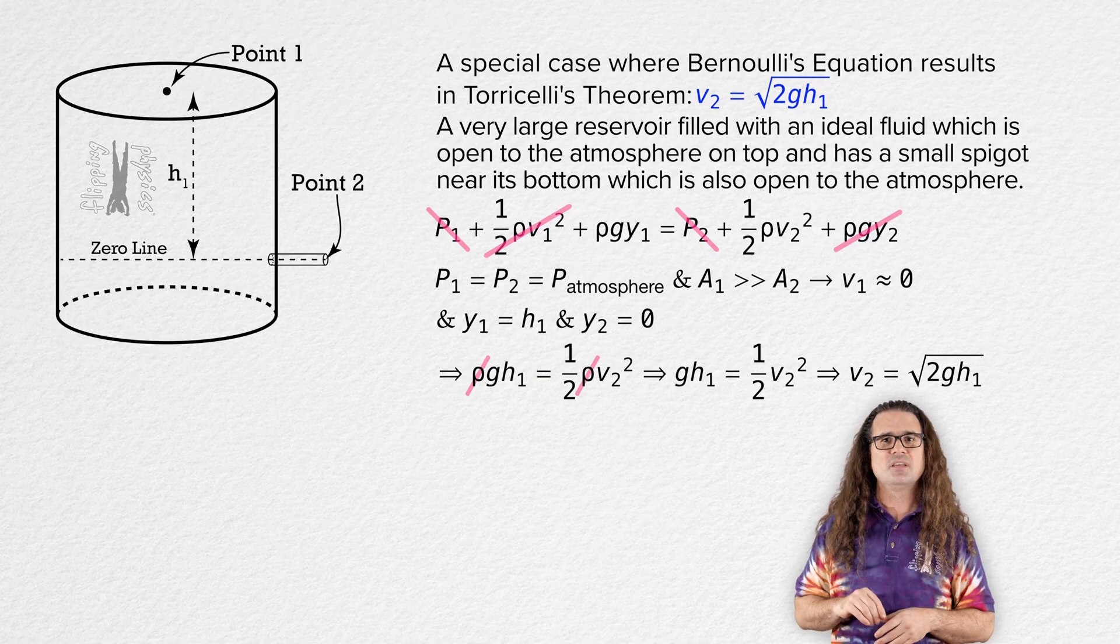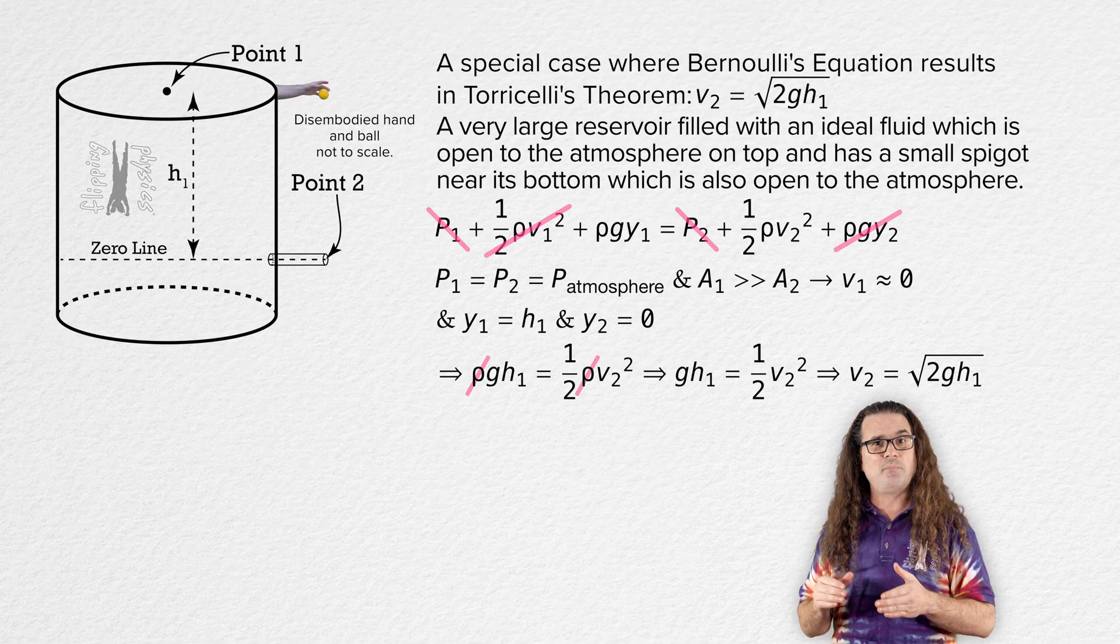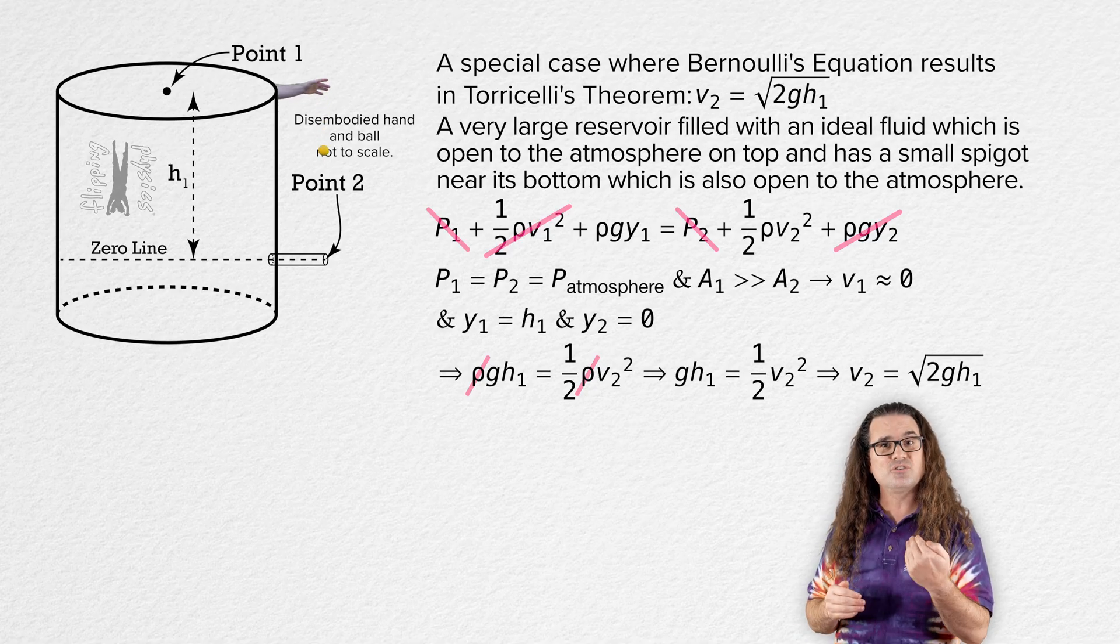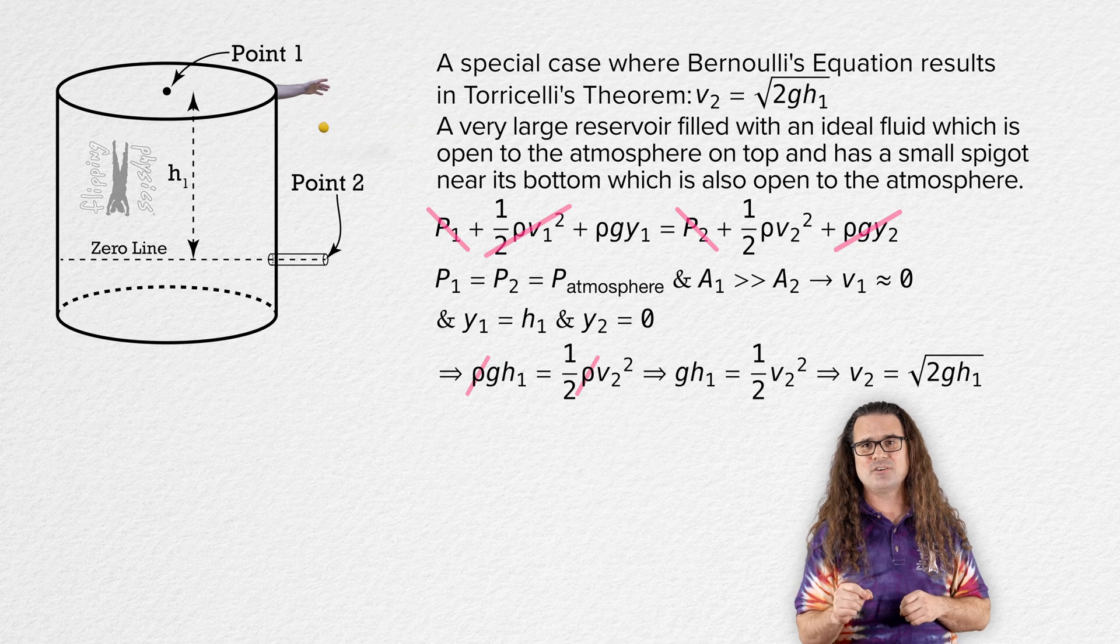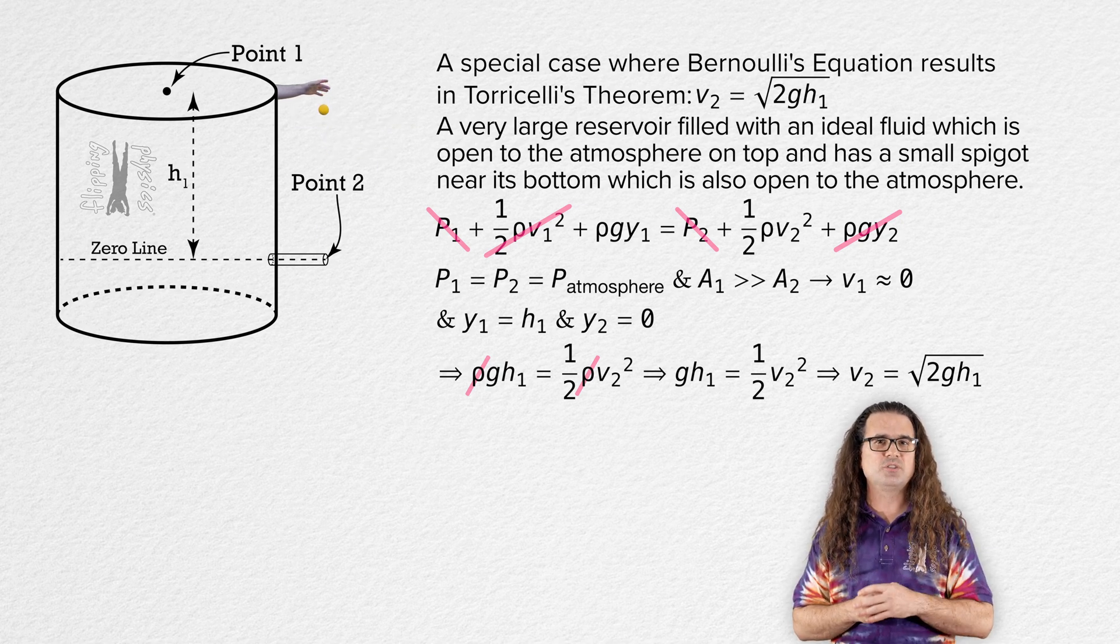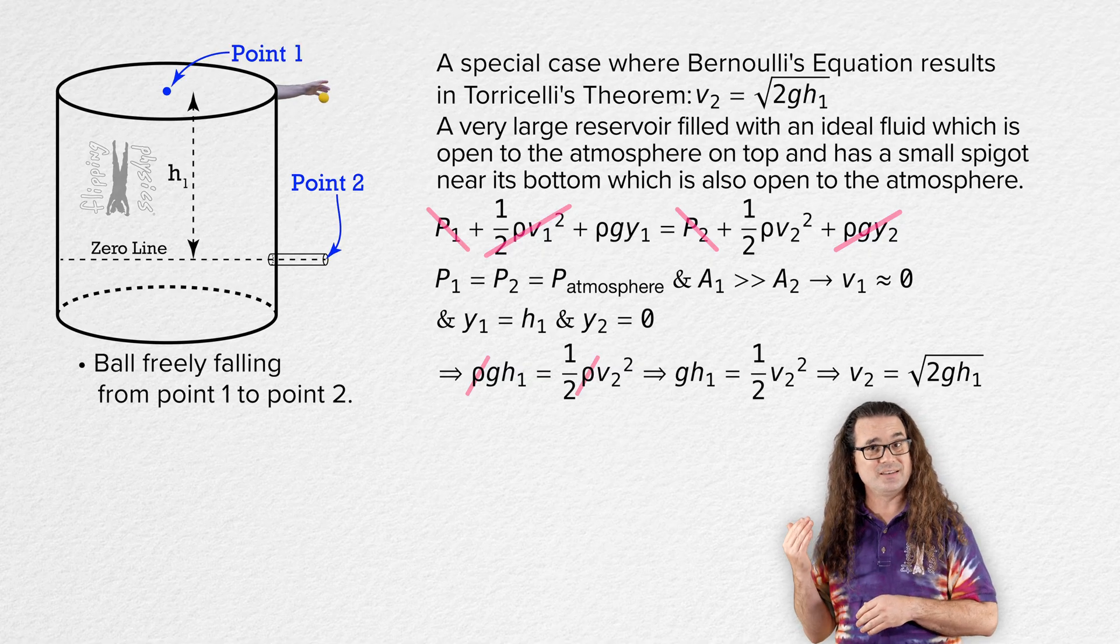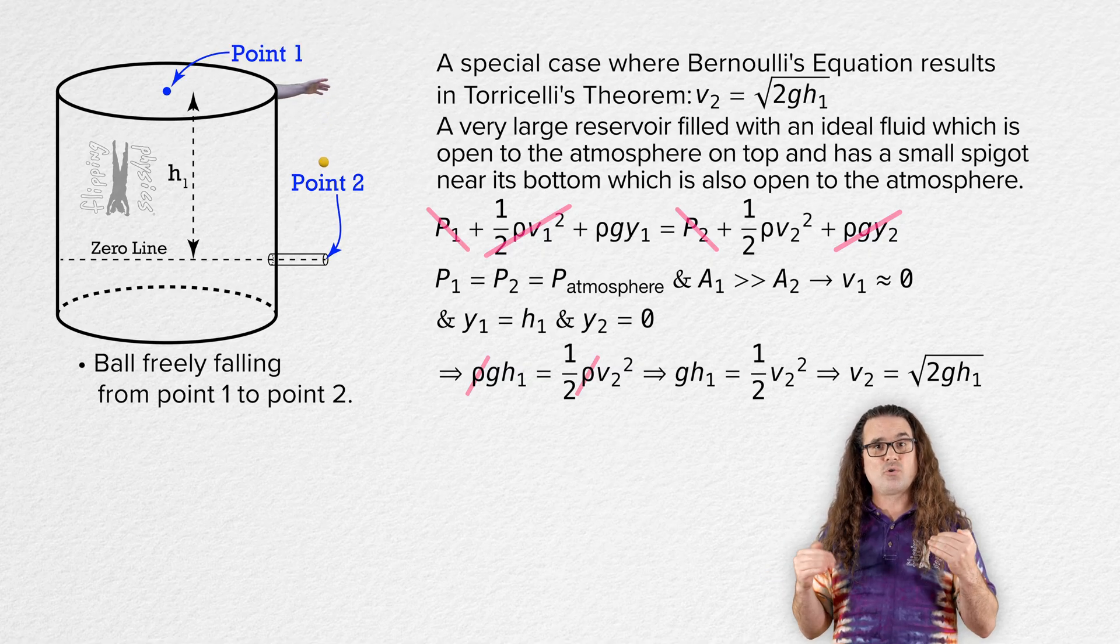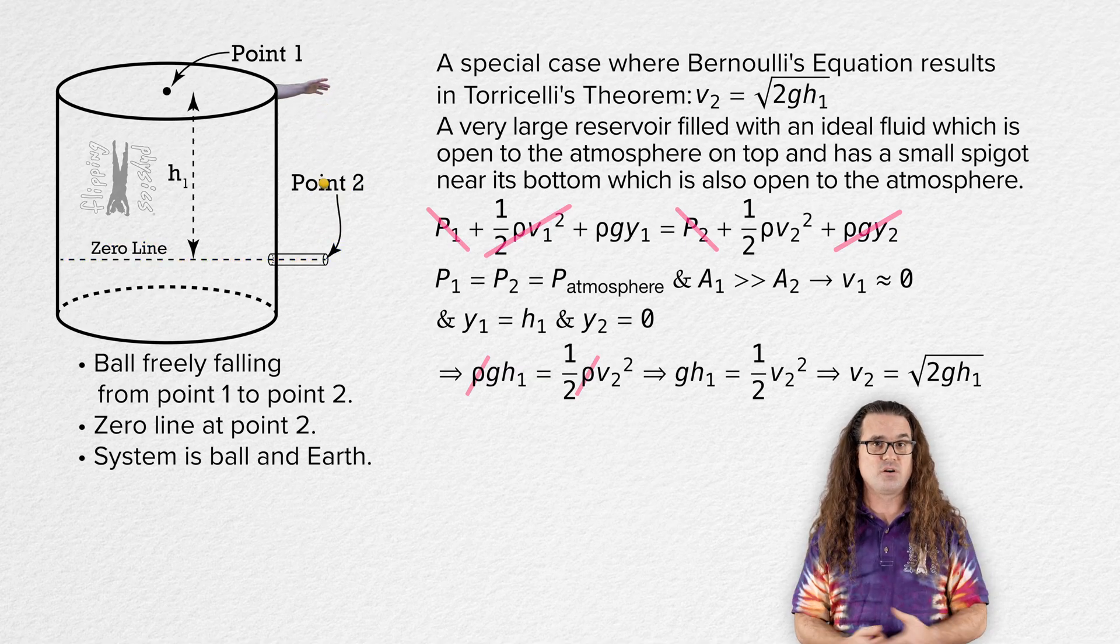Another important thing to notice is that if we were to drop a ball at point 1 and the ball were to freely fall straight down to point 2, we can use the fact that mechanical energy of the ball remains the same throughout this event to solve for the speed of the ball at point 2. We've identified points 1 and 2, so let's set the horizontal zero line at point 2 and identify the system as the ball and the earth.